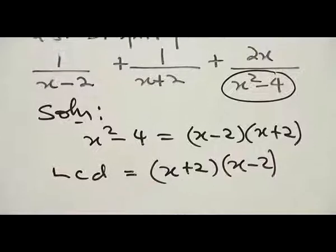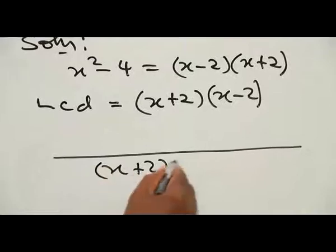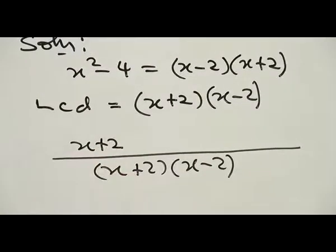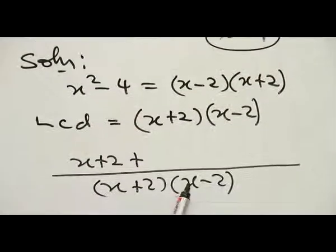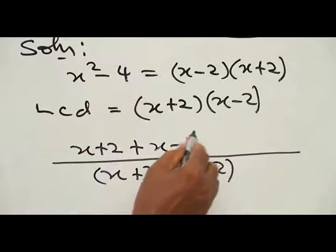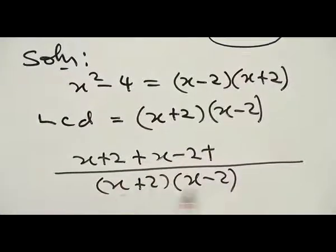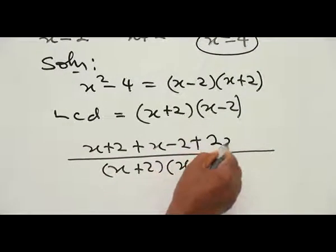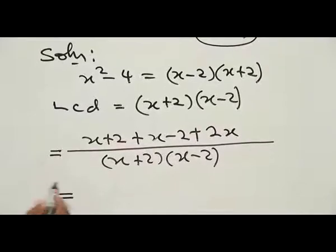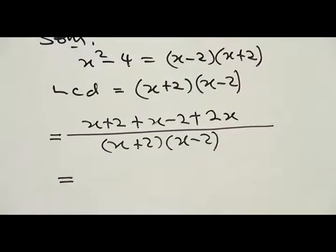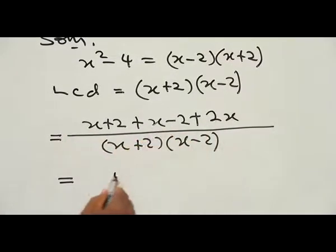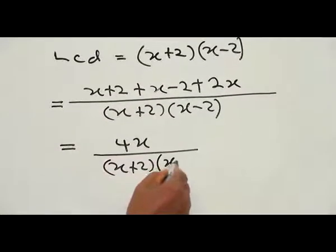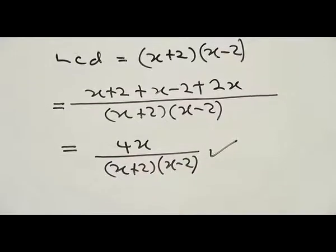Using (S plus 2)(S minus 2) as our denominator: the first term gives (S plus 2), the second gives (S minus 2). For the third term, S squared minus 4 equals (S plus 2)(S minus 2), so it reduces to 1 times 2S, giving 2S. Combining the numerator: S plus S is 2S plus 2S is 4S, and plus 2 minus 2 is 0. We are left with 4S all over (S plus 2)(S minus 2). This is the simplification.